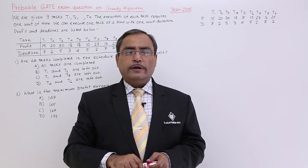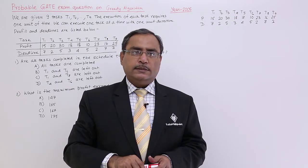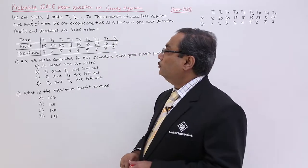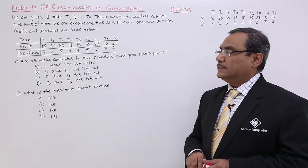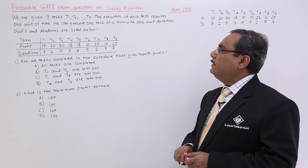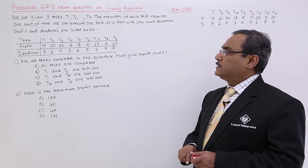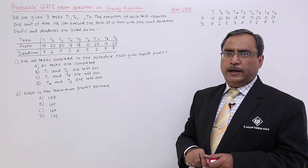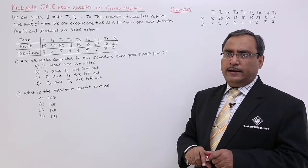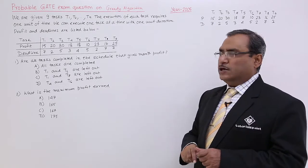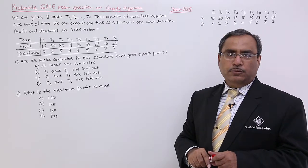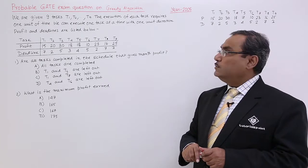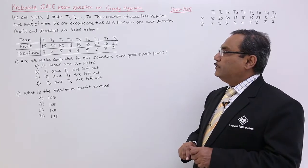We are solving one problem on greedy algorithm: job sequencing with deadline. We have 9 tasks, T1 to T9. The execution of each task requires 1 unit of time. As usual in case of greedy algorithm job sequencing with deadline, we always take that each task will take 1 unit of time to get completed. We can execute one task at a time. All the tasks are exclusive with 1 unit duration.